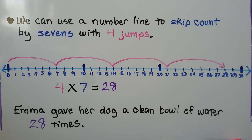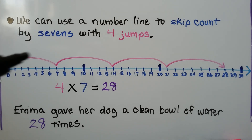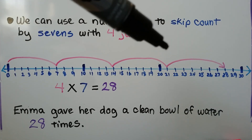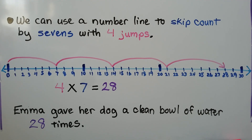We can use a number line to skip count by 7s with 4 jumps. For 4 times 7, we would do 2 times 7 plus 2 times 7. 4 times 7 is equal to 28. Emma gave her dog a clean bowl of water 28 times.